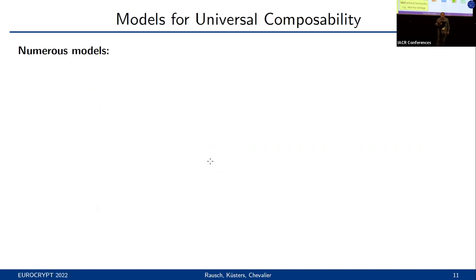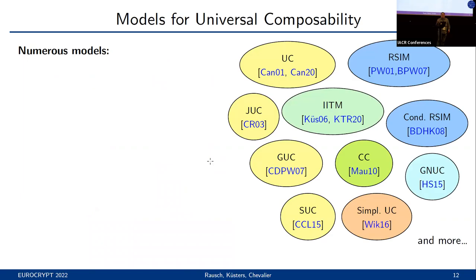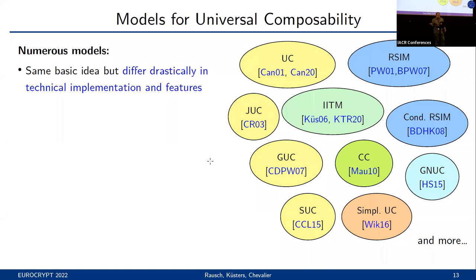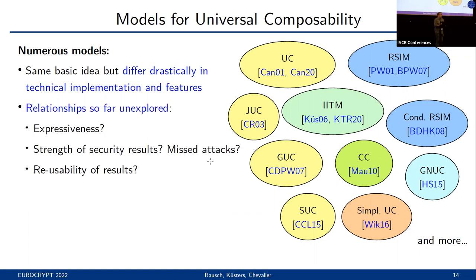Over the past two decades since its initial inception, a large number of different models for universal composability have been proposed. All of them use the same basic idea — also in terms of the security definition — but they differ, sometimes very drastically, in how they implement this idea on a technical level. And also in terms of features they offer, say in terms of supported protocols and composition types. The relationship between these models so far is mostly unexplored.